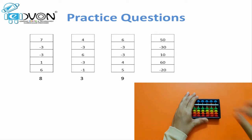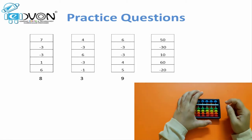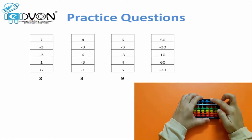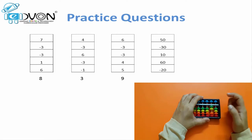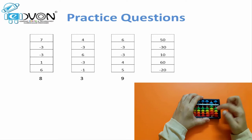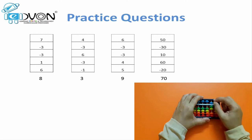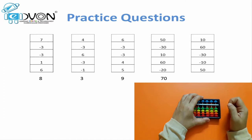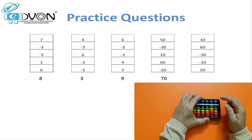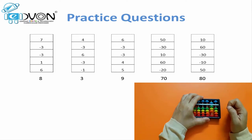Next questions are for tens, so we will work on the tens rod. 50, minus 30, plus 10, plus 60, minus 20 — answer 70. Next question: 10, plus 60, minus 30, minus 10, plus 50 — answer 80.